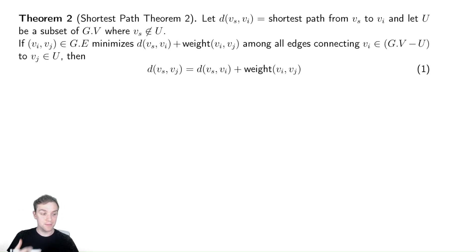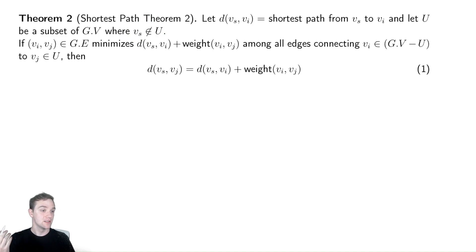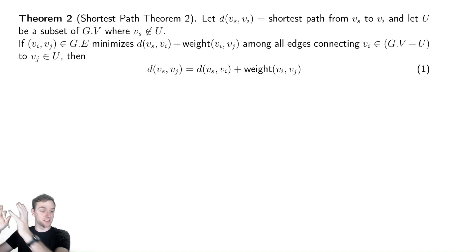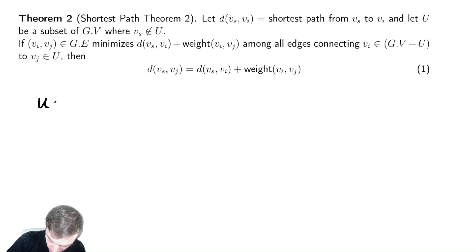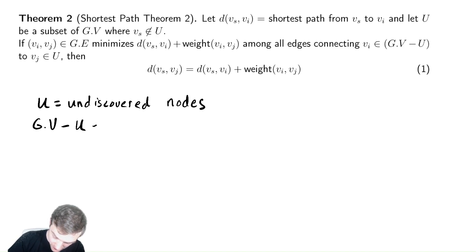We're also going to define U to be the set of vertices we have not found yet — those were the white nodes in our pictures. Because they were the white nodes, we know the starting vertex is not in them. We're imagining we're partitioning the set into the set of nodes we have found so far and the set of nodes we have not found so far. So U is the undiscovered nodes, and G.V minus U is the discovered nodes.